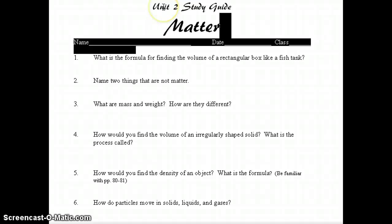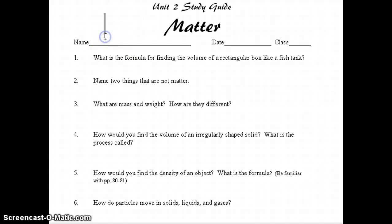Alright, looking here at the Unit 2 study guide, Unit 2 over Matter. Make sure you have your name, date, and class period on here. Number 1 says, what is the formula for finding the volume of a rectangular box like a fish tank? The correct answer should be length times width times height.